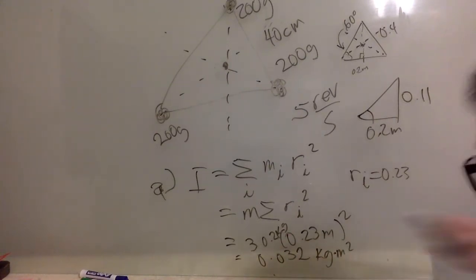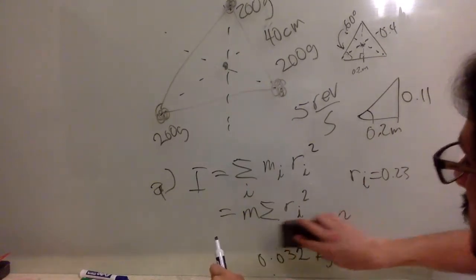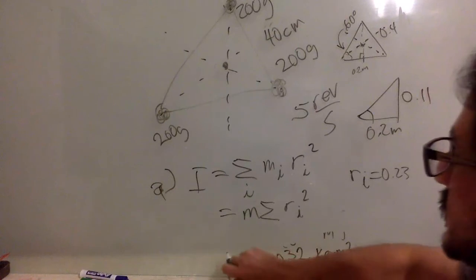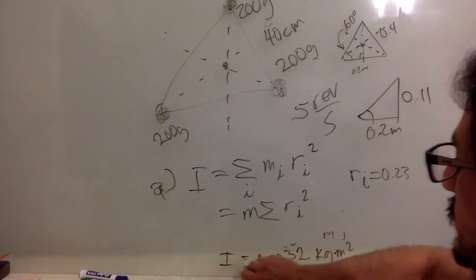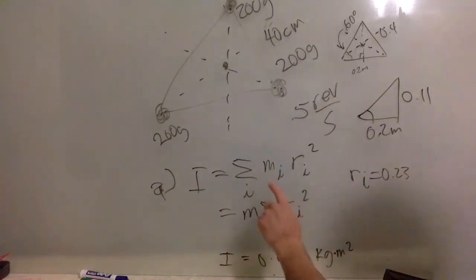So the moment of inertia is 0.032 kilogram meter squared. Those are the units. So to make it a little bit more clear, I'm going to get rid of this. This is the moment of inertia.